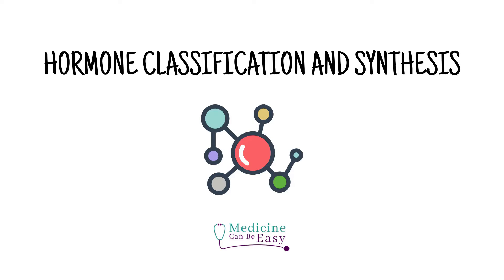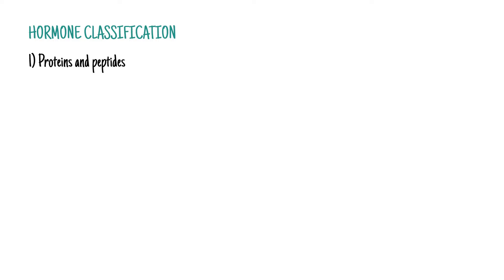First we need to talk about how hormones are classified. We distinguish three basic classes: peptides and proteins, steroids, and amines.